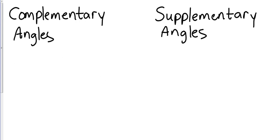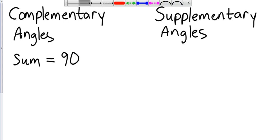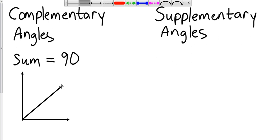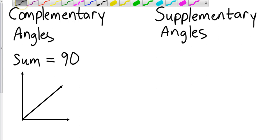The final two relationships are complementary and supplementary angles. We've covered this in Algebra 1 and pre-algebra. Complementary angles are two angles whose sum, when added together, equals 90 degrees. We're looking for a 90-degree angle, and the only way to know it's 90 degrees is if there's a little box drawn in the corner.